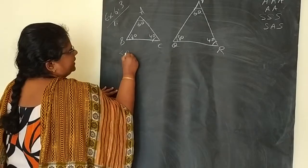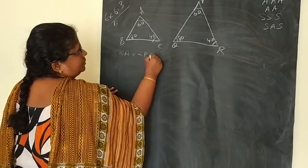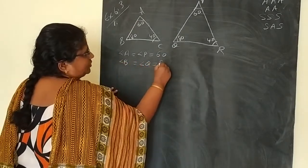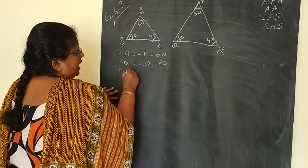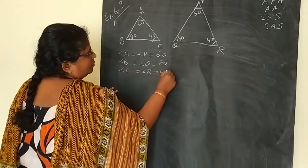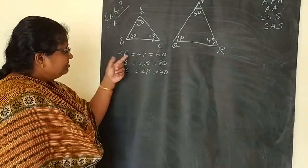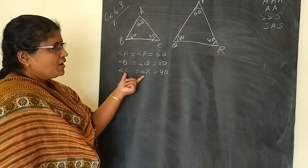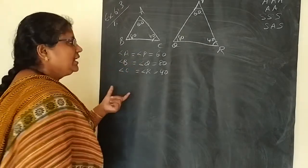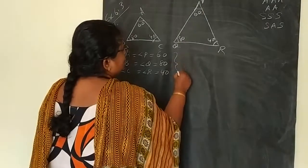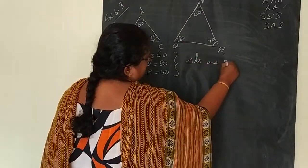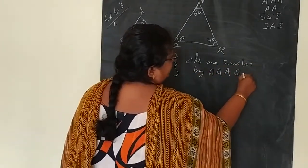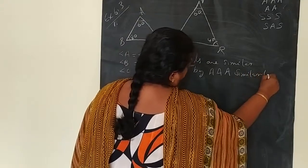Observe the figures. Angle A and angle P are both equal to 60. Angle B and angle Q are both equal to 80. Angle C and angle R are both equal to 40. So three pairs of angles are equal. We can tell that these two triangles are similar by AAA similarity criteria.